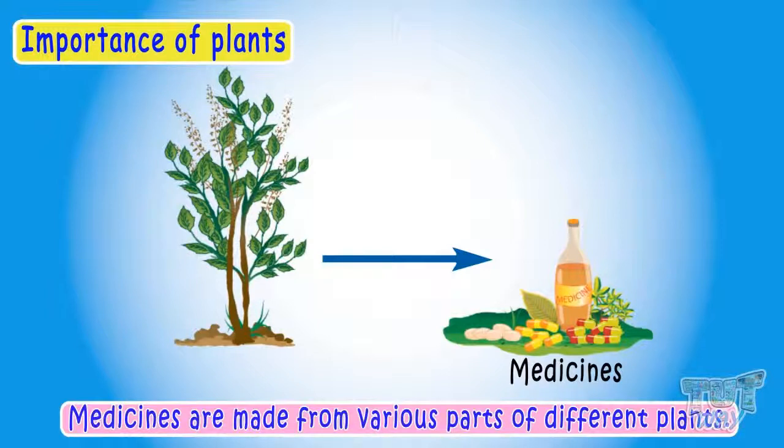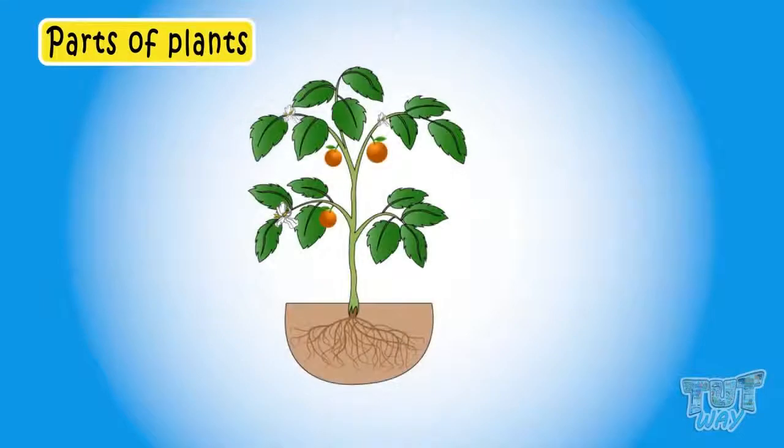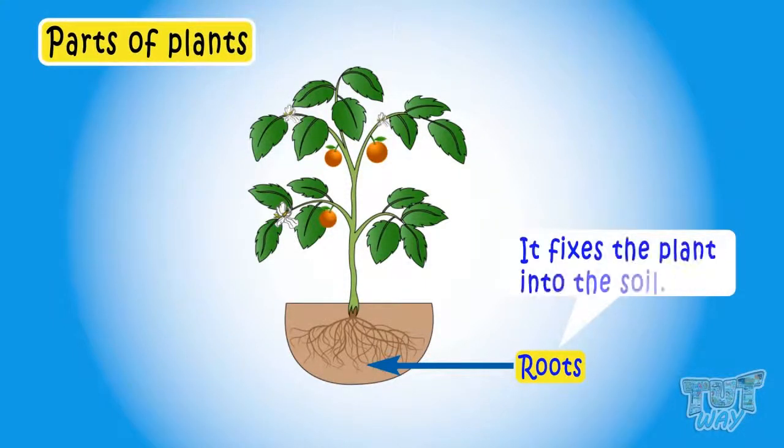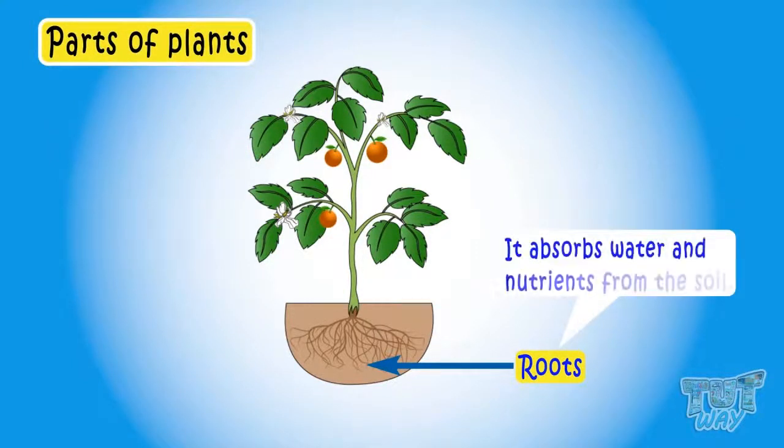Now let's see different parts of plants. Plants have different parts. Let's learn. These are the roots of the plants that help the plant to stay upright. It fixes the plant into the soil and also helps plants absorb water and nutrients from the soil.